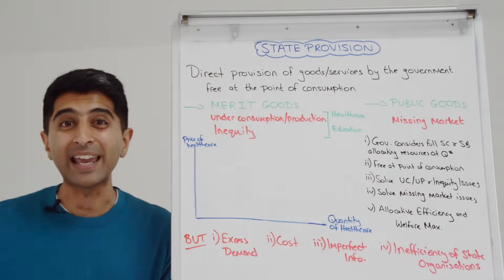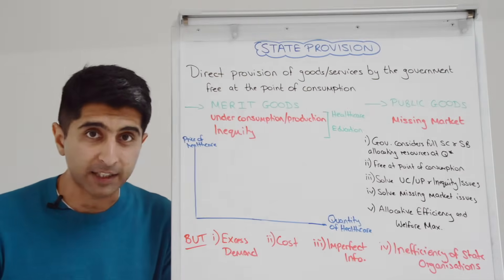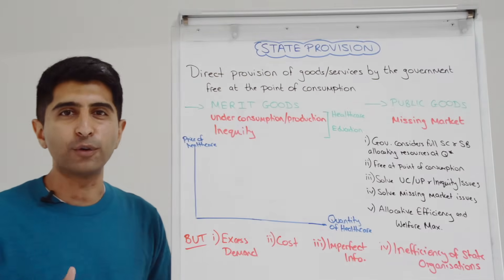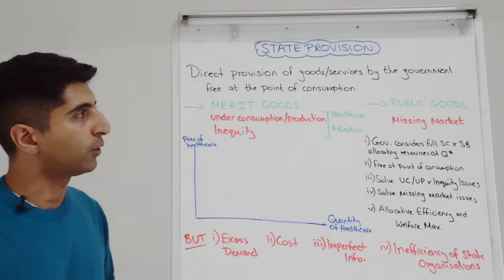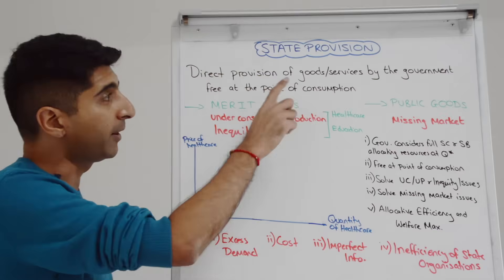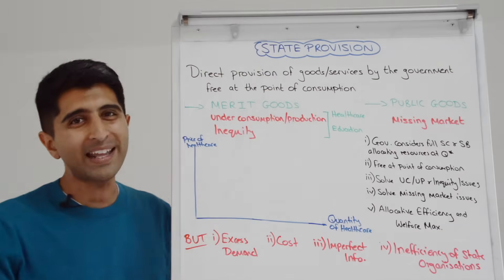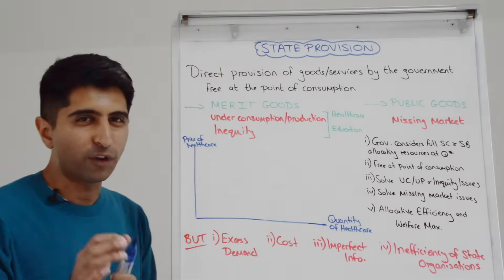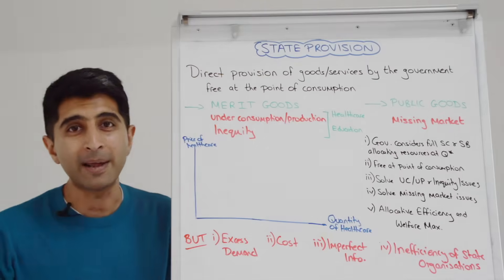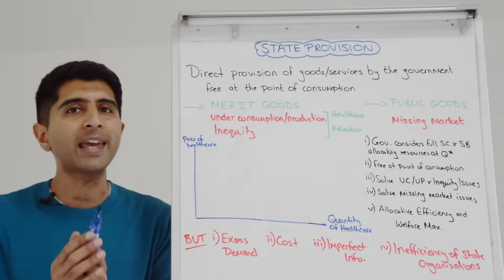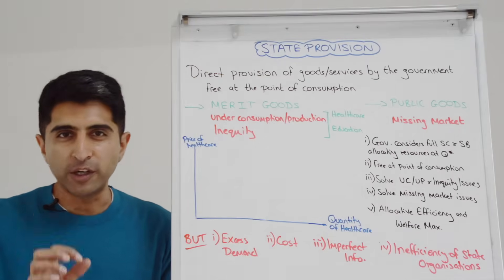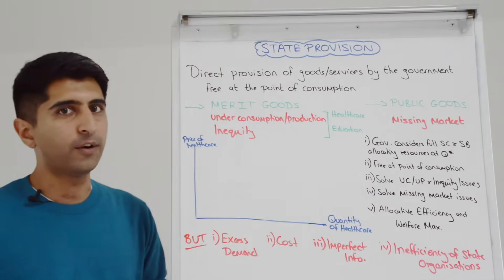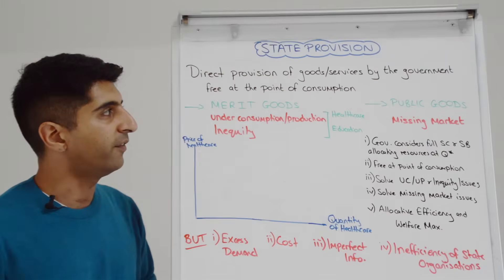The government is taking over the market completely, allocating all resources towards a given good or service, and also providing that good or service free at the point of consumption. So it's very extreme, and in that sense you've got to be careful when you decide to use this as a policy to solve market failure.